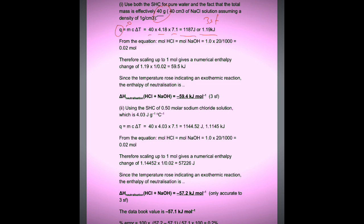From the equation, the moles of HCl is the moles of sodium hydroxide. We had 20 cm cubed in 1,000, that is 0.02 moles because N equals C times V. If we scale this up to 1 mole, take 1.19 times 1 divided by 0.02, we'll get an answer of 59.5.